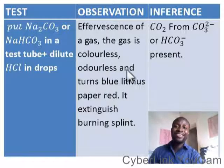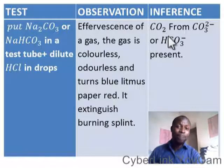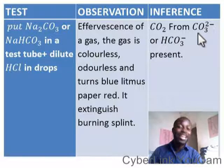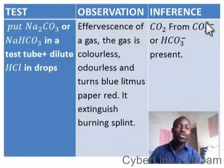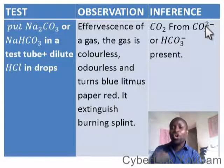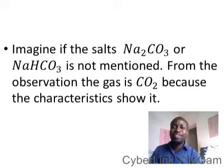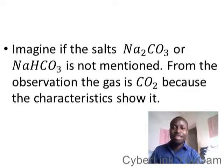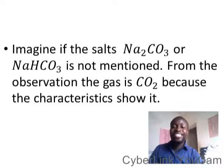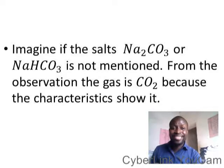So, if you have all these characteristics, you know that CO₂ is present. But CO₂ cannot just be present — that CO₂ must be from a CO₃²⁻ radical. The radical could either be CO₃²⁻ or HCO₃⁻. Now, imagine if the salt Na₂CO₃ is not mentioned. From the observation, that is from the characteristics, the gas is CO₂, because the characteristics show all of that explanation.